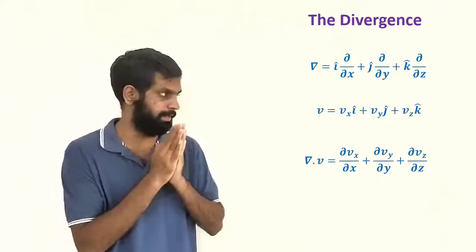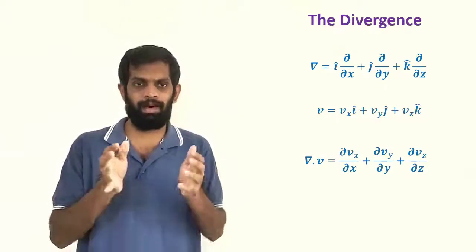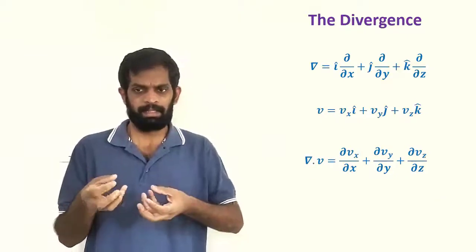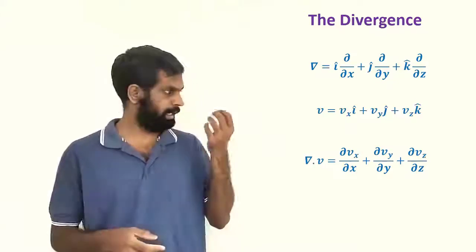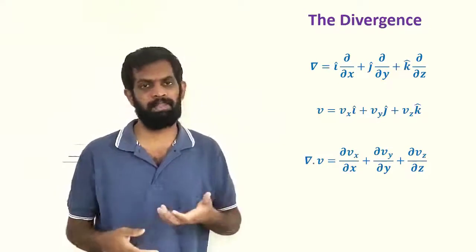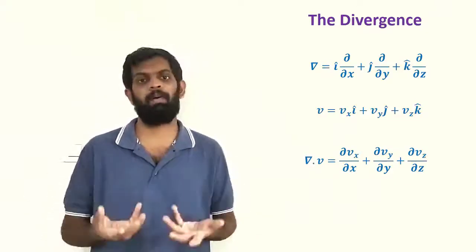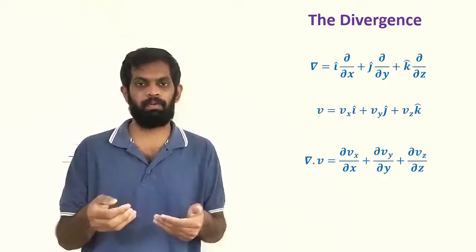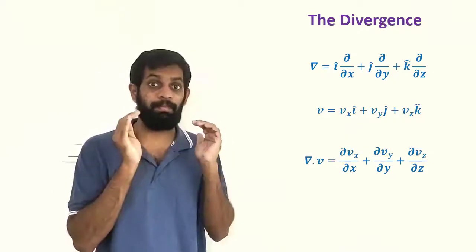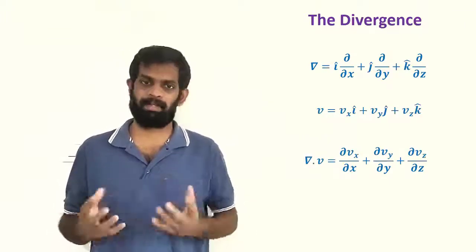Mathematically, we define divergence like this. Still now we don't know what this divergence means — the divergence is about a vector function. That is just the mathematical part. What about the physics? So we are moving on to the physics part, discussing the physical significance of divergence. Our divergence is del dot of a vector function.